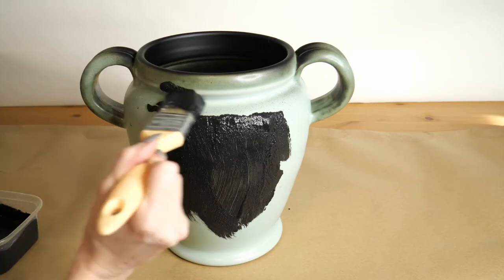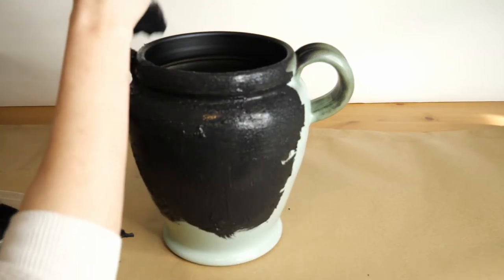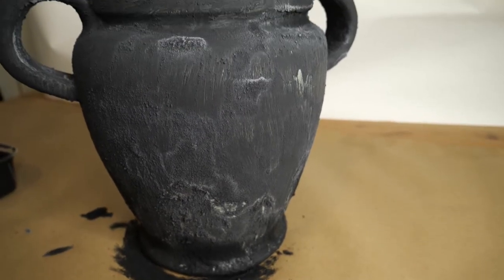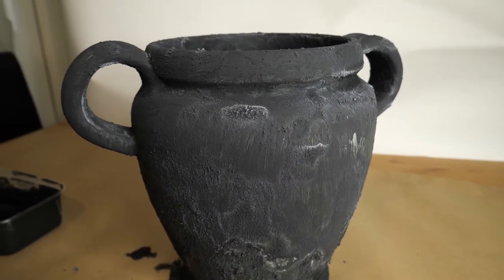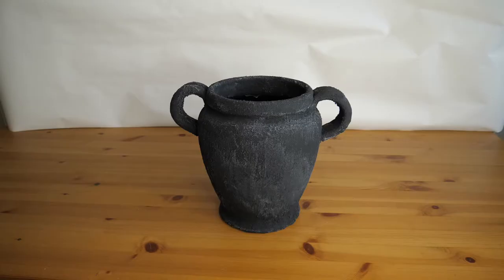I then painted the whole pot just the same as the first one. This went on even more unevenly than the first pot, and it was really difficult to get it into all the nooks and crannies. Once it was dried, it was even more apparent how uneven it was, and I had to sand down some of the really chunky parts before applying the second coat of paint. But once the second coat was on, it evened out quite a bit and looked fine.